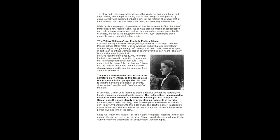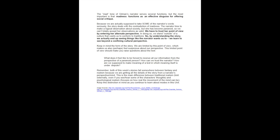For example, where the narrator writes: 'I don't know why I should write this. I don't want to. I don't feel able.' In addition to events in the story, she also tells us her mental state, and this contributes to the perspective and the tone of the story. Since we watch the narrator of the Yellow Wallpaper descend further into mental illness, we have to ask why Gilman would choose madness if she wanted readers to understand her critique about women's rights. The mad tone of Gilman's narrator serves several functions, but the most important is that madness functions as an effective disguise for offering social critique. Because we are actually supposed to take some of the narrator's words seriously, the story deals with the contradiction of madness. The narrator tries to make a logical observation about society, but she has become paranoid, so we can't totally accept her observations as valid.